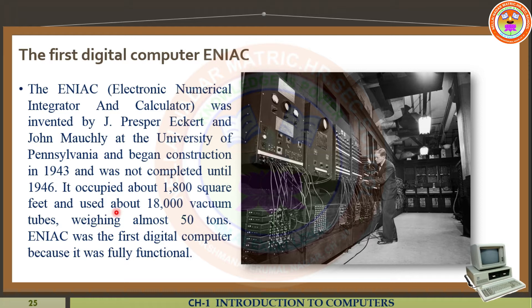This machine occupied about 1,800 square feet. It used about 18,000 vacuum tubes. In the first generation of computers, the main components used were vacuum tubes. So this is the first digital computer from 1943 to 1946, and the main component is vacuum tubes. This machine's weight is almost 50 tons.